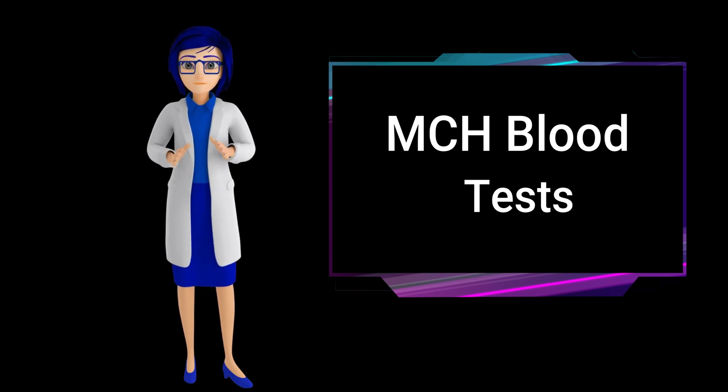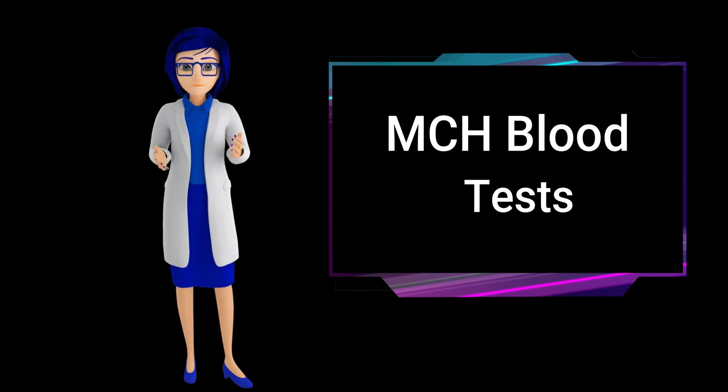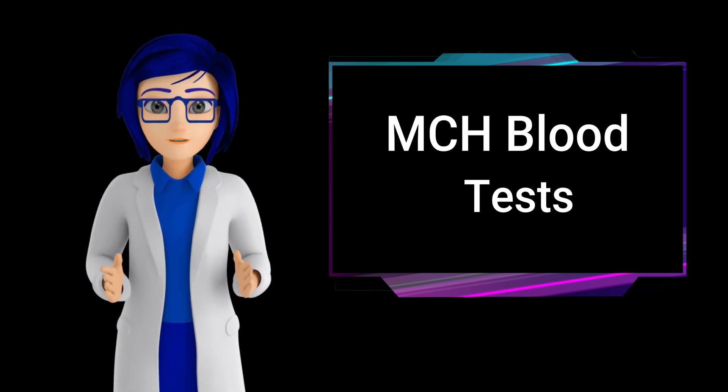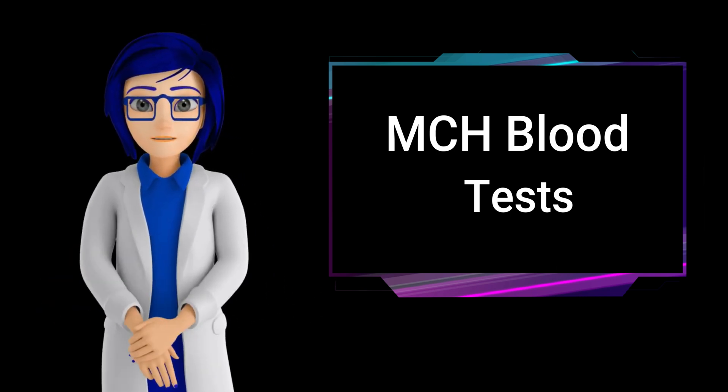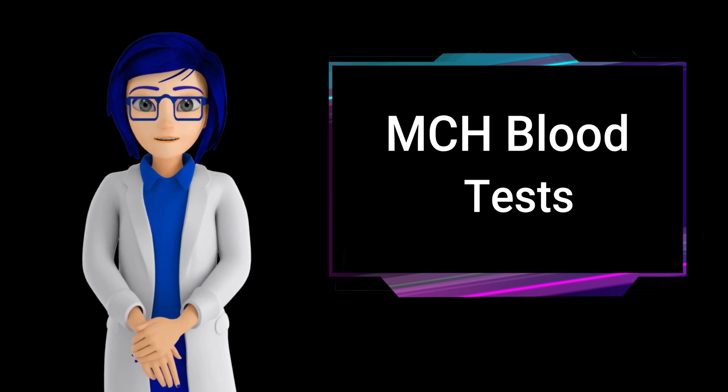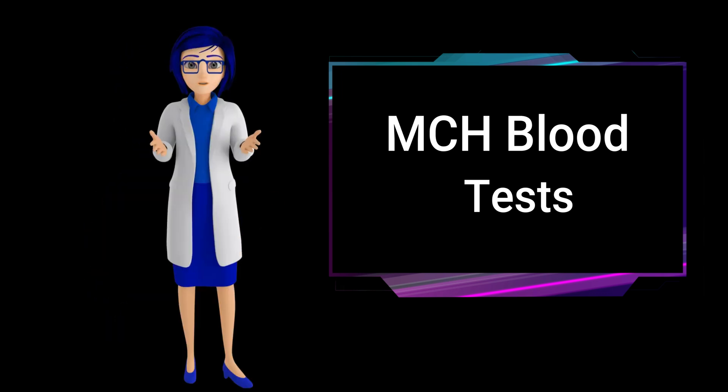Folate deficiency: Folate (vitamin B9) is important for hemoglobin synthesis. A folate deficiency can also lead to megaloblastic anemia and low MCH levels.